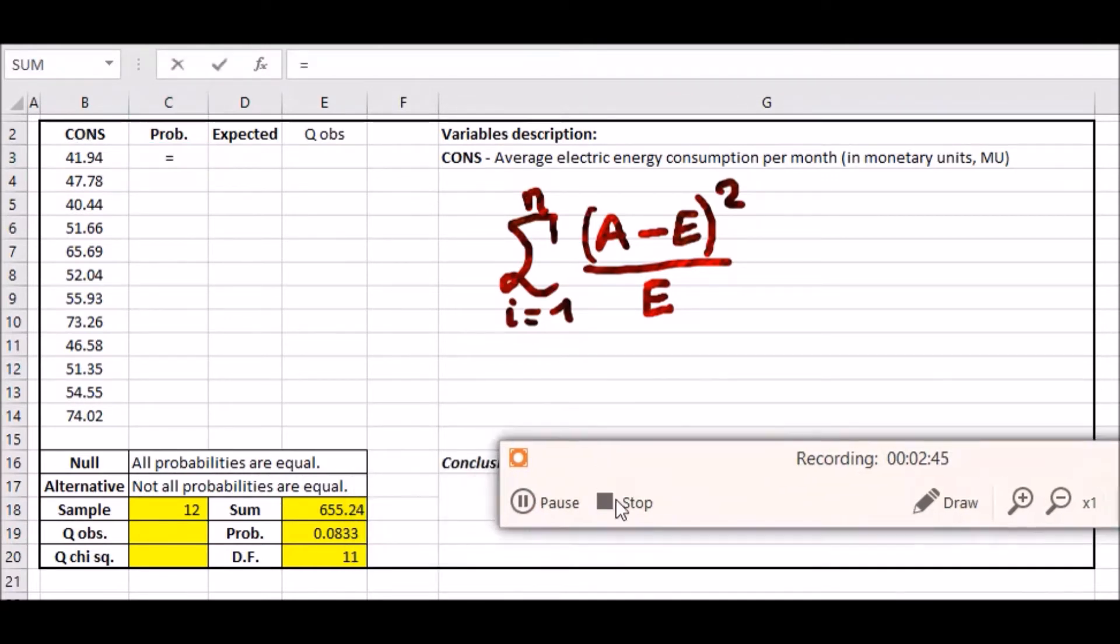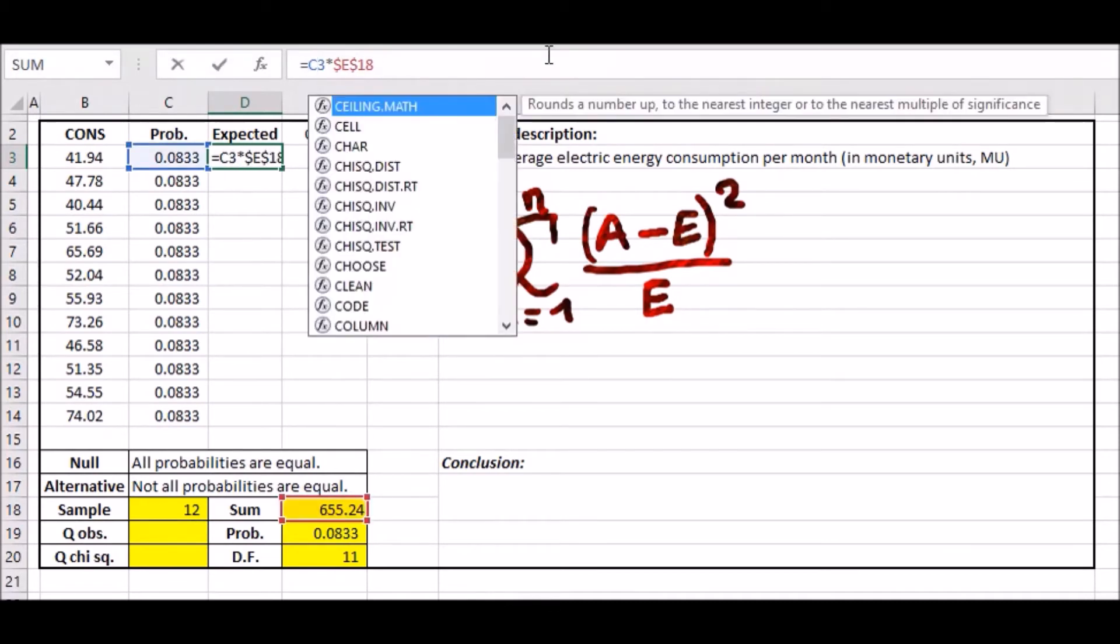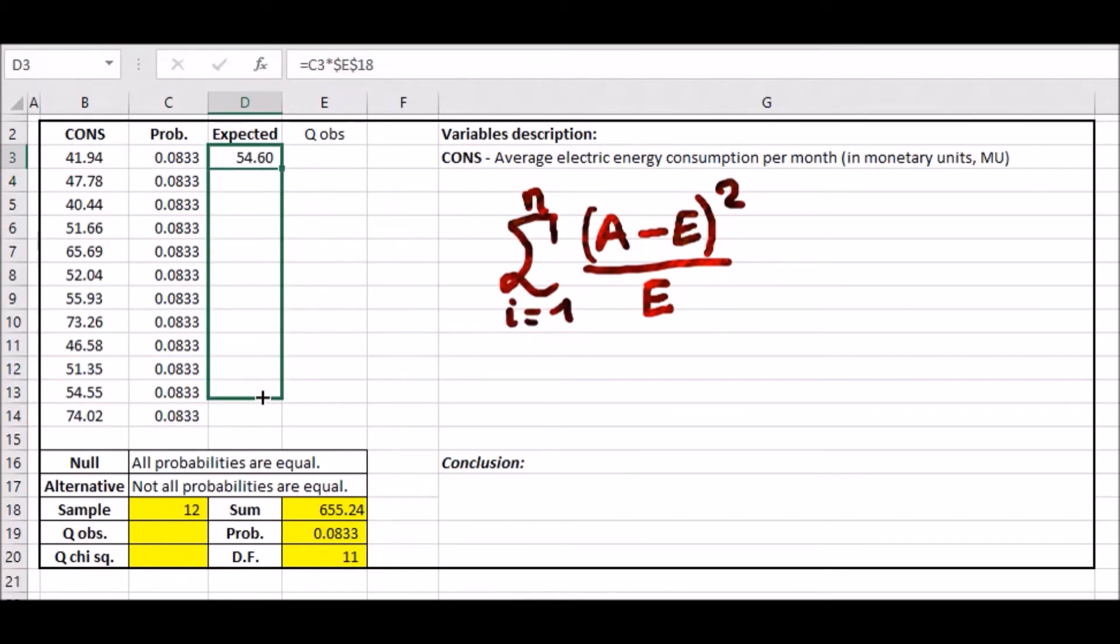Let's solve this. The probability is going to be all of these values. Press F4 to lock the cell, then hit the double tab corner and all of this happens. The expected value is simply the probability times the total sample size, so it's the sum. Lock all these cells by pressing F4. You don't need to lock C3 because you're going down with it, and you get 54.6.